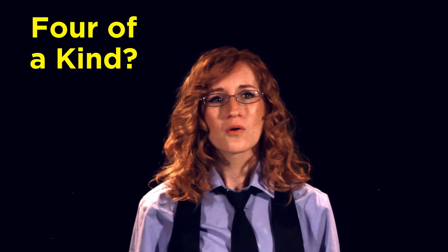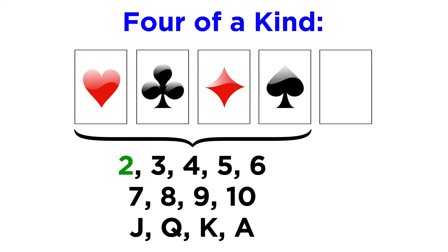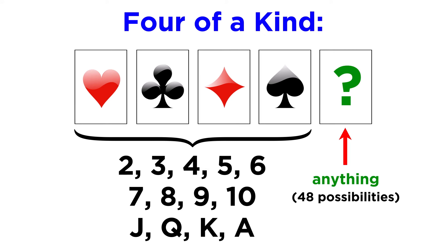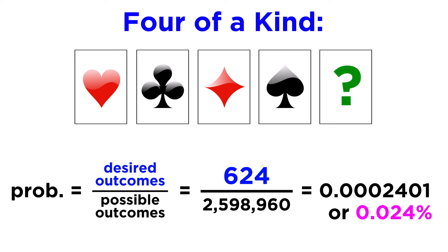What about a four of a kind? There are thirteen possible four-card combinations that would give us a four of a kind — four twos, four threes, all the way up to four aces. But the fifth card can be anything except the other four cards of that type, which means there are forty-eight possibilities for the fifth card. So it's thirteen times forty-eight, or six hundred and twenty-four possible four of a kinds. Divided by the total number of possible hands, it's still quite small, but things are getting a little more likely.